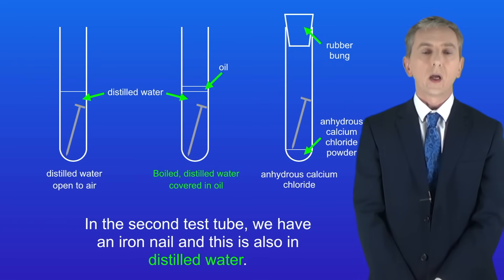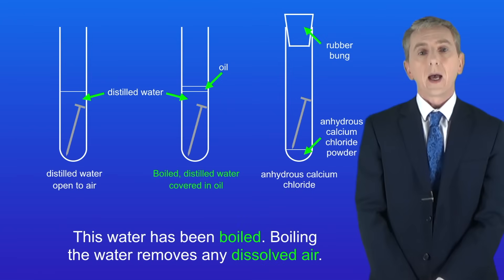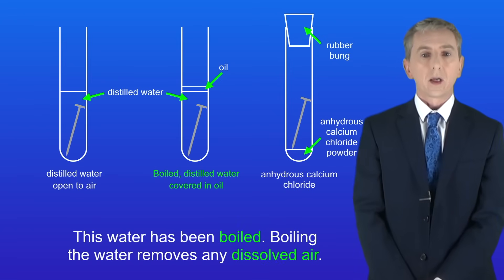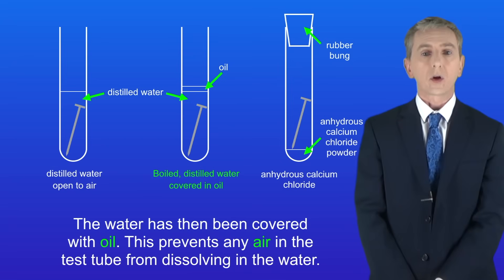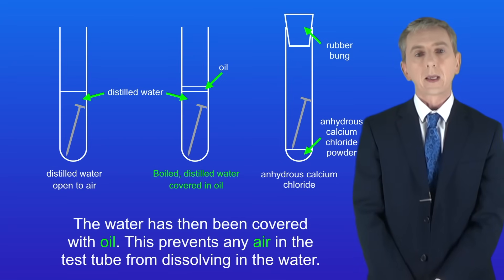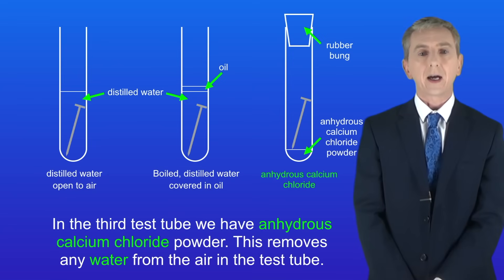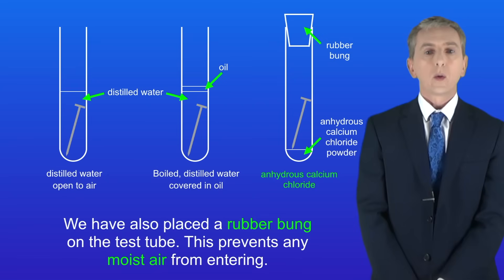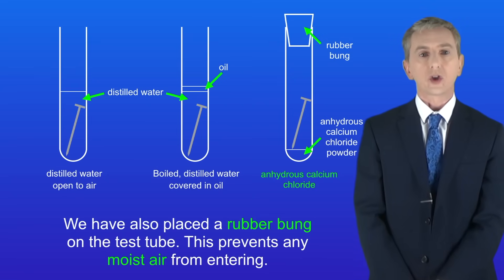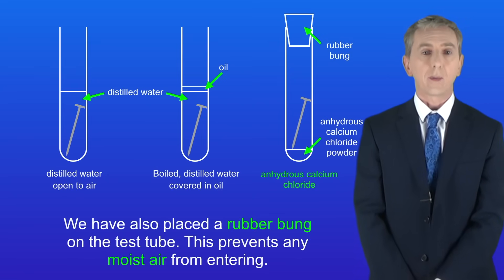In the second test tube we've got an iron nail also in distilled water. However this water has been boiled. Boiling the water removes any dissolved air. The water has then been covered with oil, which prevents any air in the test tube from dissolving in the water. In the third test tube we've got anhydrous calcium chloride powder, which removes any water from the air in the test tube. We've also placed a rubber bung on the test tube and this prevents any moist air from entering.